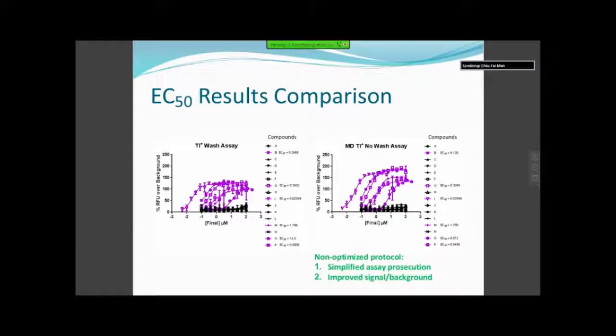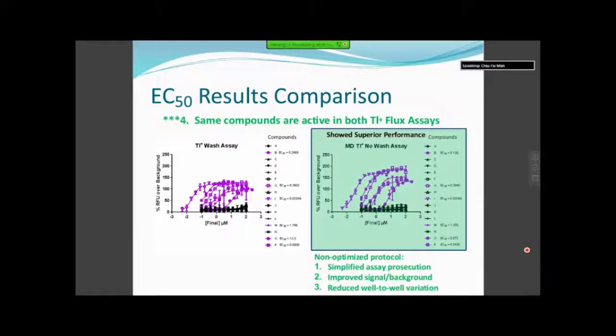In addition to easier prosecution and improved signal to background, we saw also reduced well-to-well variation, as shown here by some of these error bars. But more importantly, we saw that the same compounds are active in both thallium flux assays. When you look at the active compounds B, G, I, M, O, and P, we see that the EC50 results are very comparable. More importantly, both assays were comparable to the manual patch clamp. But given the other things that we said, the simplicity and improved signal to background and the reduced well-to-well variation, we decided that the Molecular Devices kit actually had better performance. We moved forward with that with our HTS, and we had some interesting data from that as well. Unfortunately, the program for that ended, and I don't have much more data to show you.